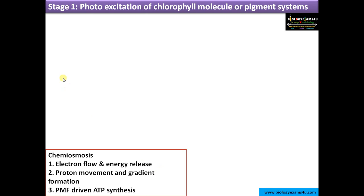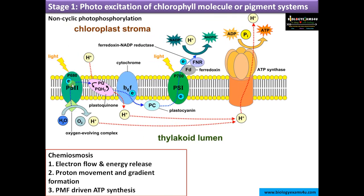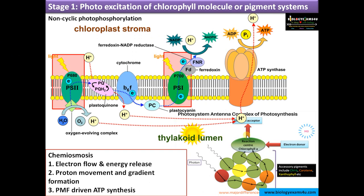Stage one is photo excitation of the chlorophyll molecule or pigment systems. Taking non-cyclic photophosphorylation, this is the enlarged view of the thylakoid membrane showing photosystem 2, photosystem 1, and many electron carriers in between, along with ATP synthase. Light energy is captured by accessory pigments like chlorophyll B, carotene, and xanthophyll, and that energy is transferred to adjacent pigment molecules and finally channeled to the reaction center chlorophyll A molecule, from which an energized electron is released.